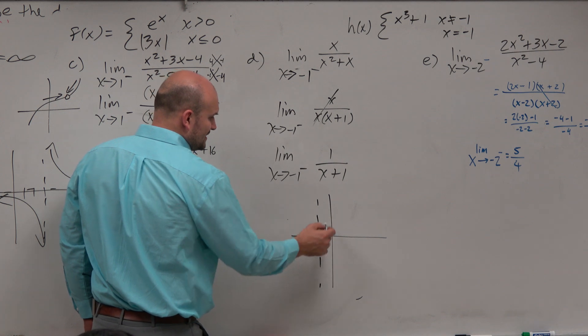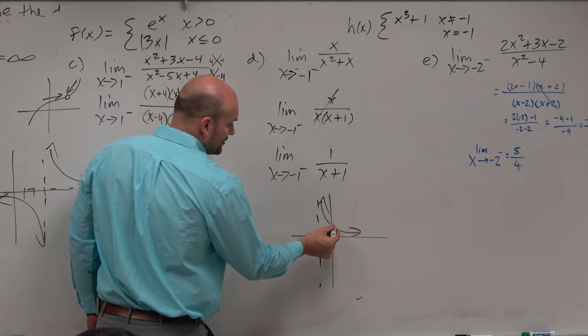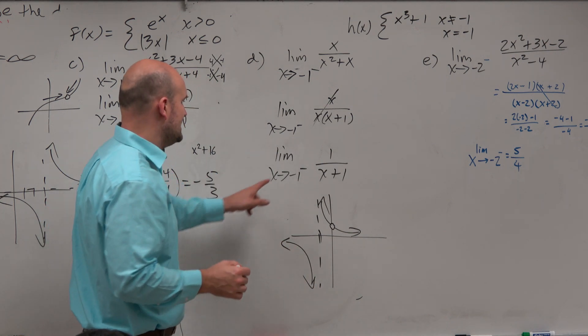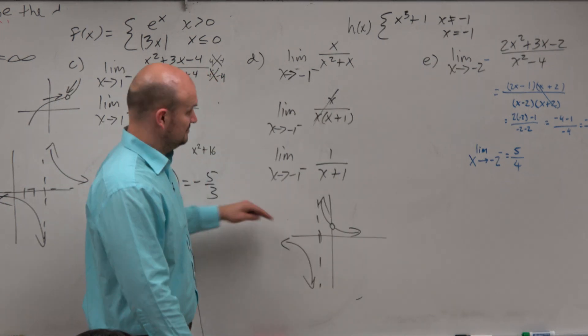So my asymptote's right there. And actually, there's a hole at 0. And then I have a y-intercept like this. So as I'm approaching negative 1 from the left, where am I going? Negative infinity.